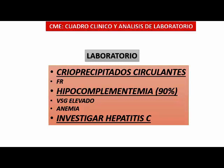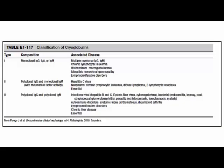Hay diversas posibilidades de crioglobulinas: están las del tipo policlonal IgG e IgM, que incluyen hepatitis B, C, síndrome de Sjögren. Pero también pueden tener crioglobulinas de tipo monoclonales IgG e IgA, asociados a mieloma múltiple, leucemia, macroglobulinemia de Waldenström. Las neoplasias hematológicas van dependiendo de la clona.